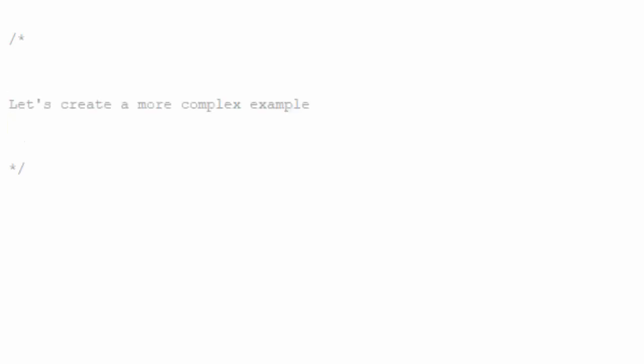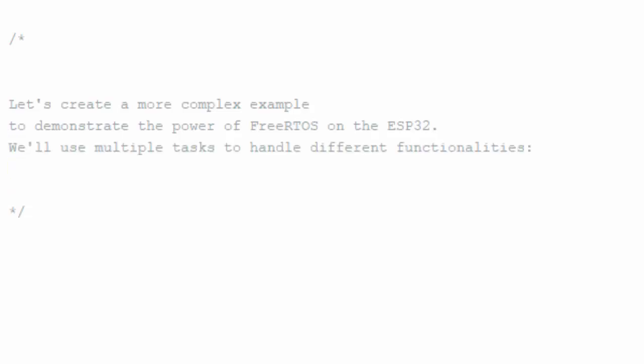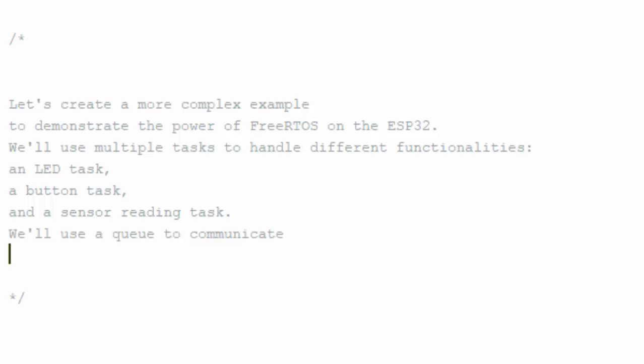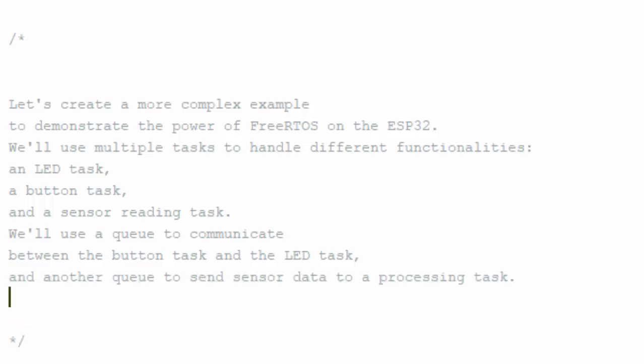Now let's convert this simple queue example into a more complex one to demonstrate the power of FreeRTOS on the ESP32. We will use multiple tasks to handle different functionalities. We'll create an LED task and a button task like in previous examples, plus a new sensor reading task. A queue will be used to communicate between these tasks — between the button task and LED task, and another queue to send sensor data to a processing task.